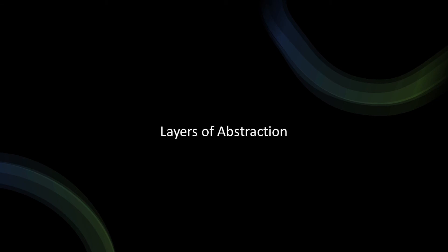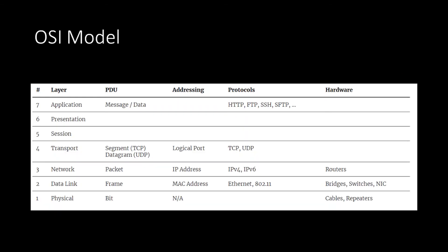Next, let's look at the layers of both the OSI and the TCP/IP model. The Open Systems Interconnection, or OSI model, is a largely historical seven-layer conceptual model. The layers are: physical, data link, network, transport, session, presentation, and application.